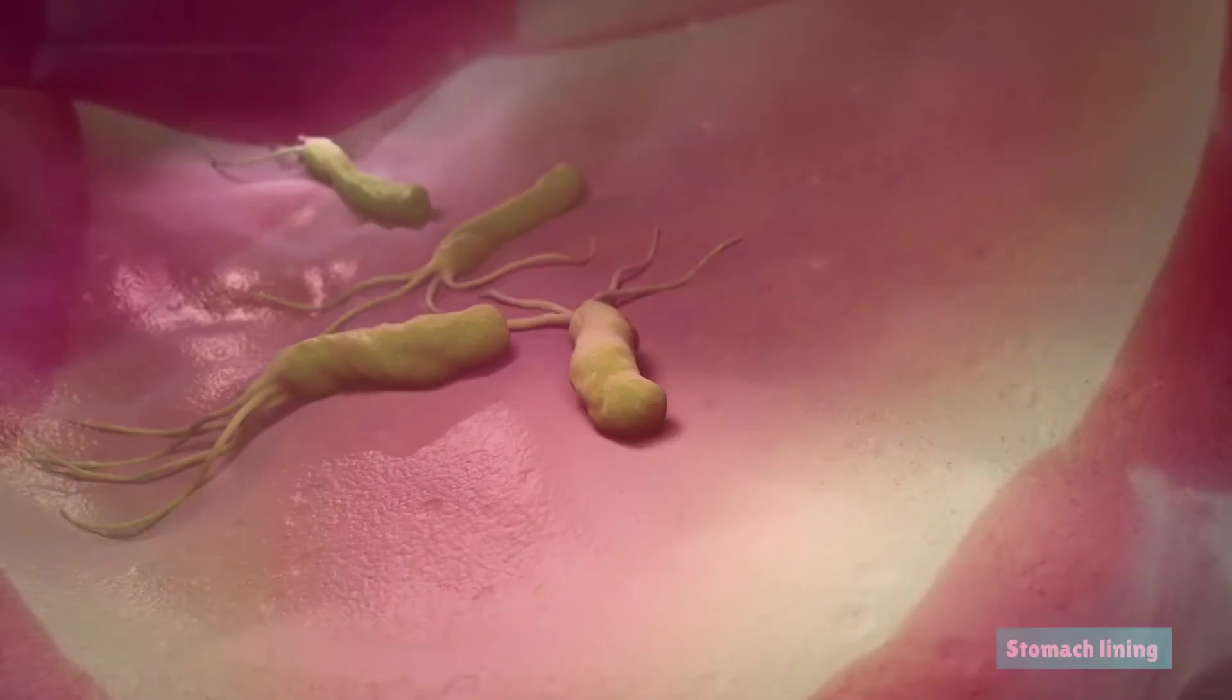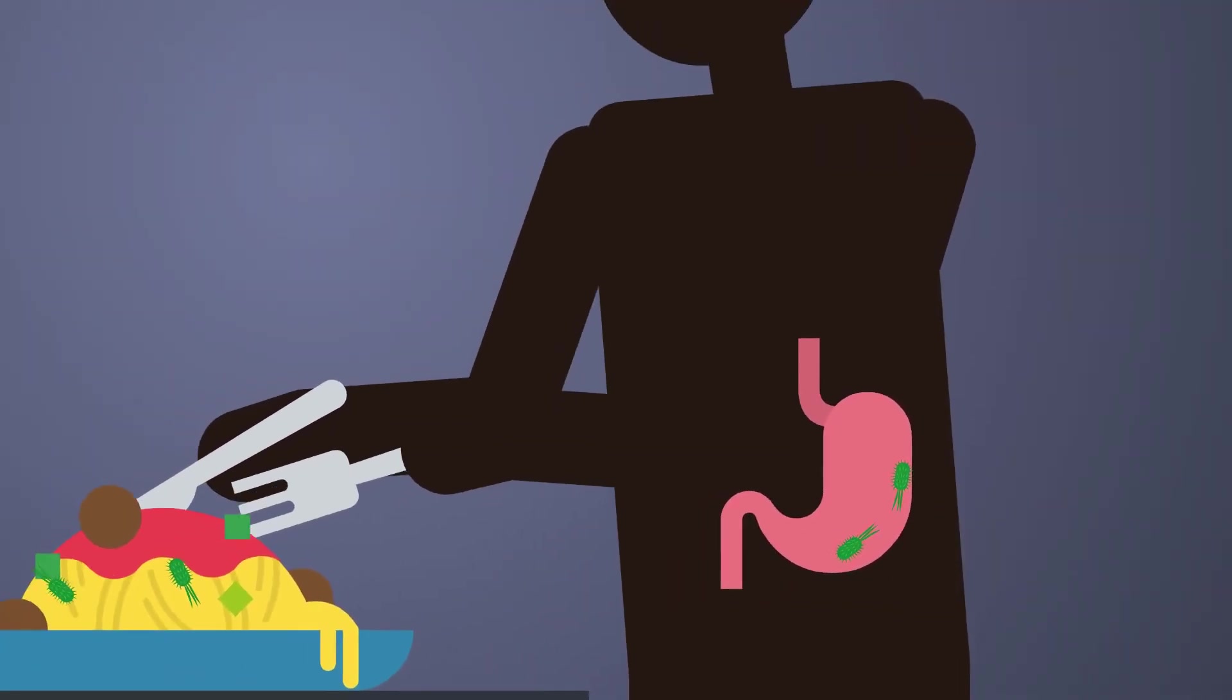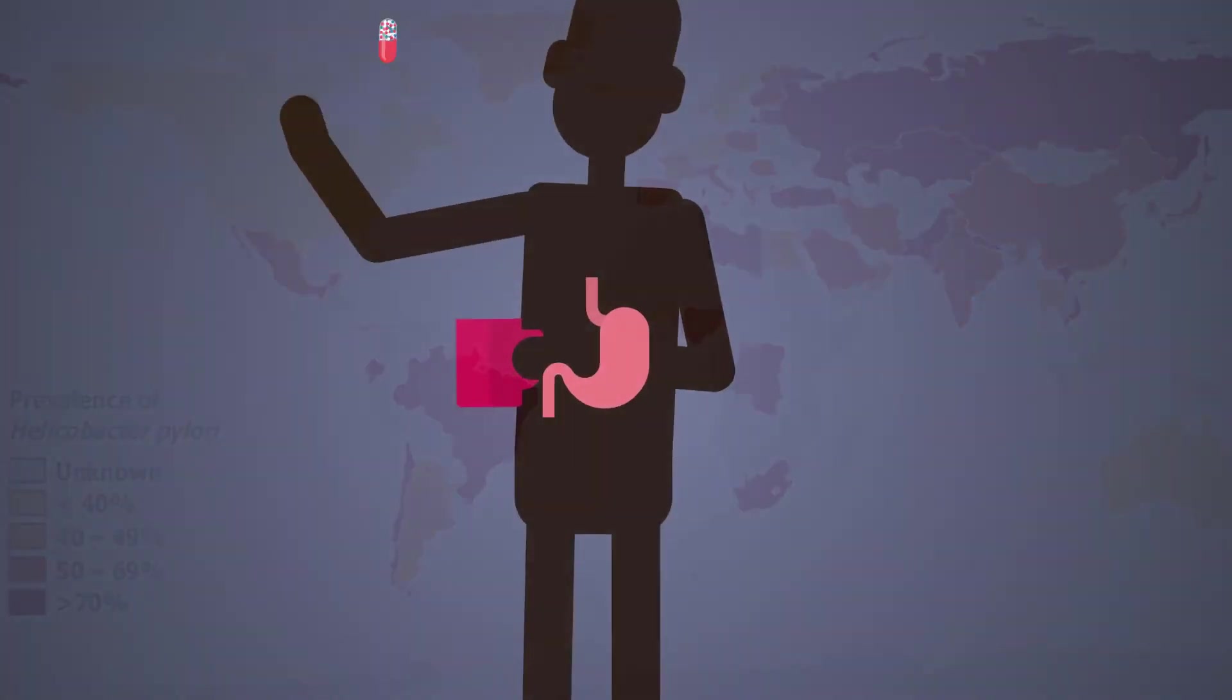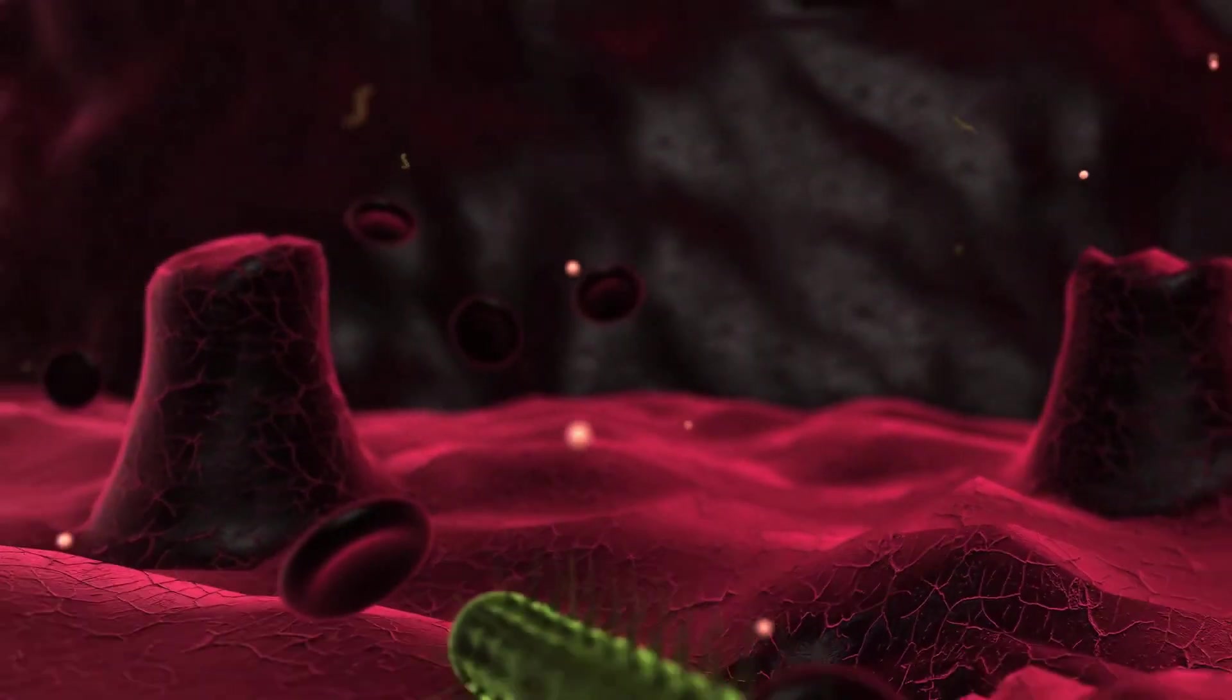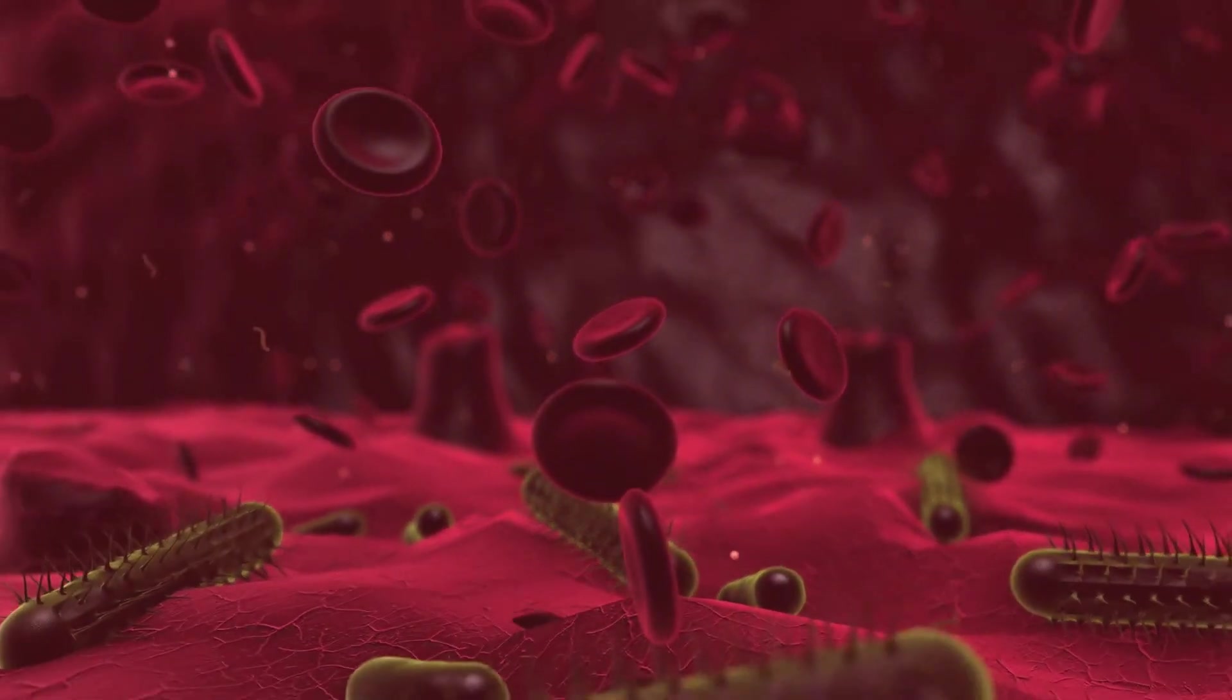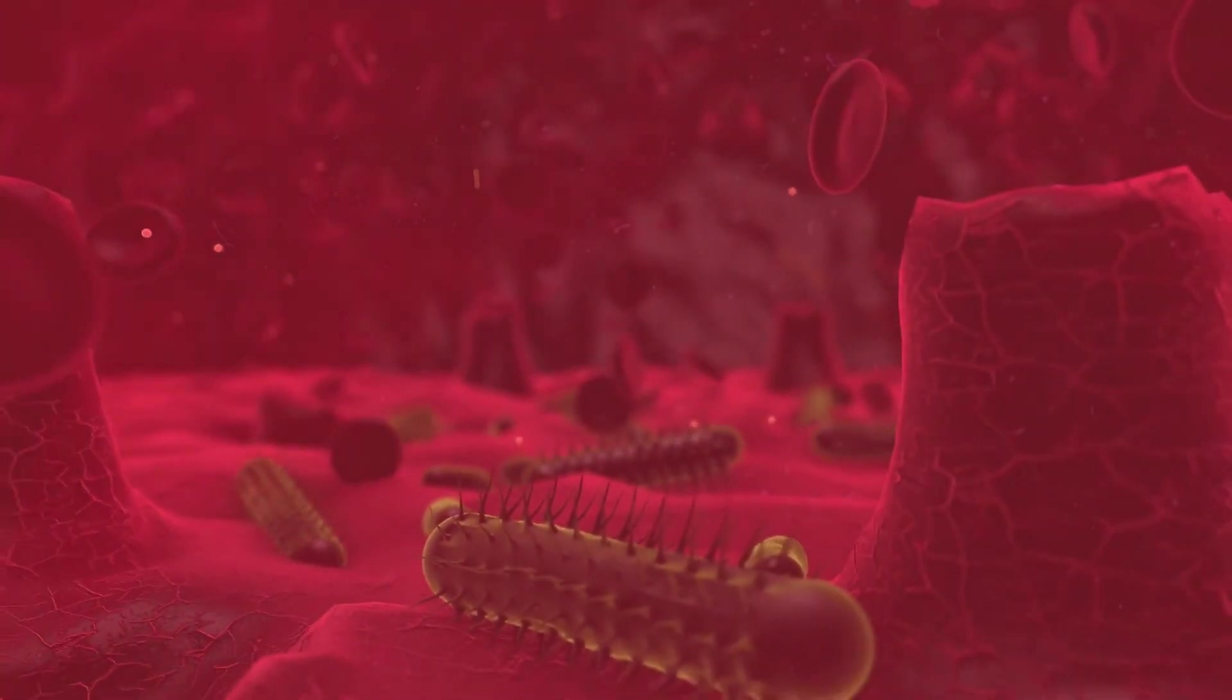H. pylori is a bacteria that infects the lining of the stomach. It is usually spread through contaminated food and water. The infection is no longer very common in the developed countries. For most people, infection won't cause them to have any problems and can easily be treated through antibiotics. However, in some cases, H. pylori can cause long-lasting chronic inflammation in the stomach, known as severe chronic atrophic gastritis, and stomach ulcers. This chronically inflamed environment can lead to the development of cancer.